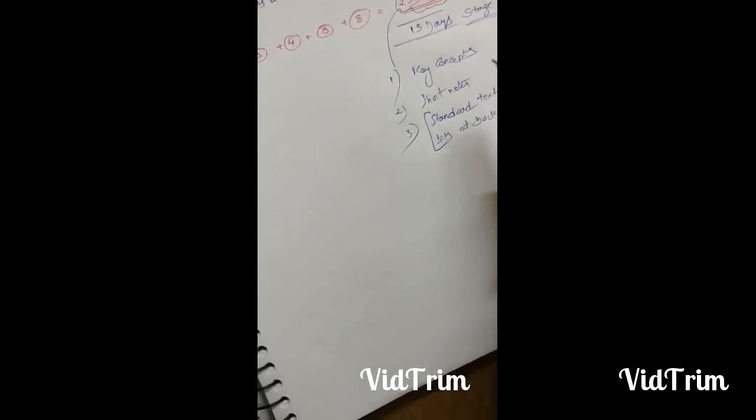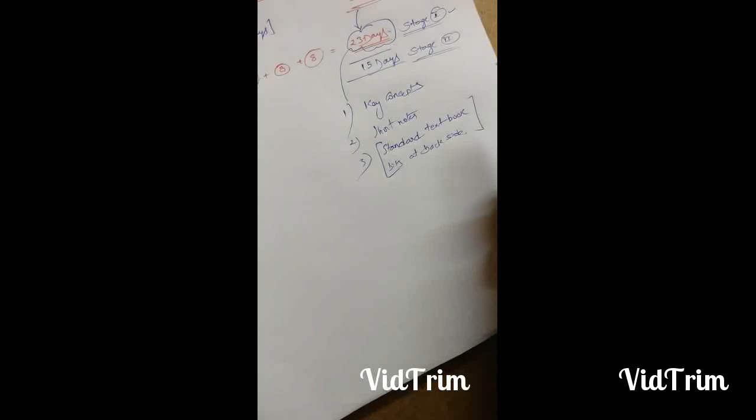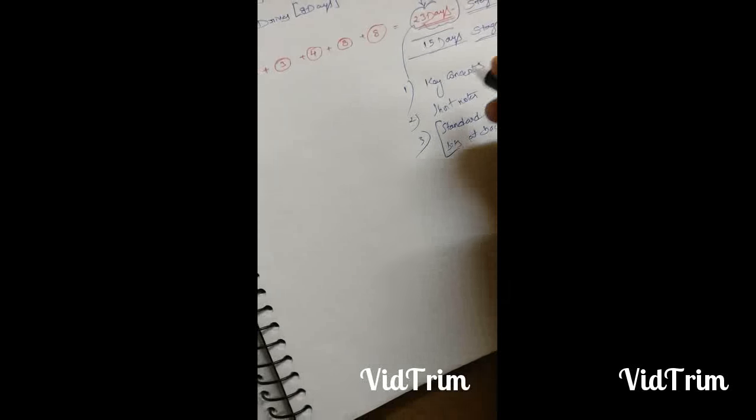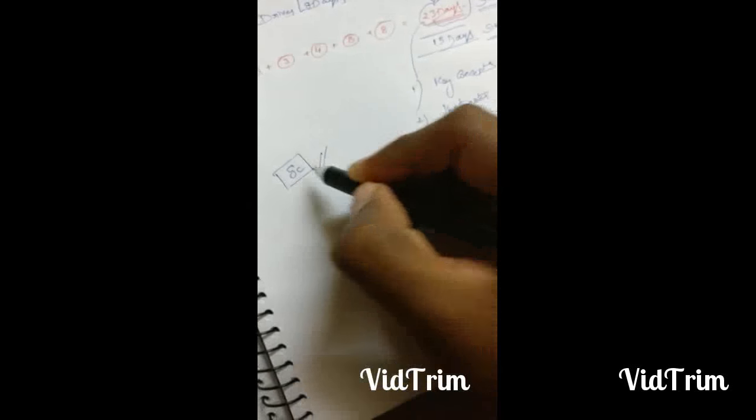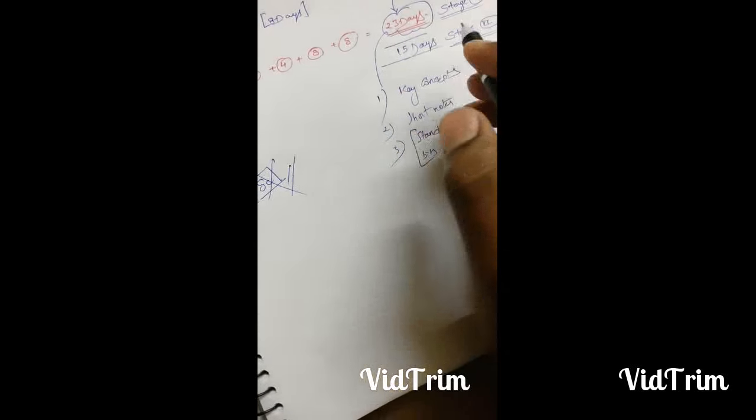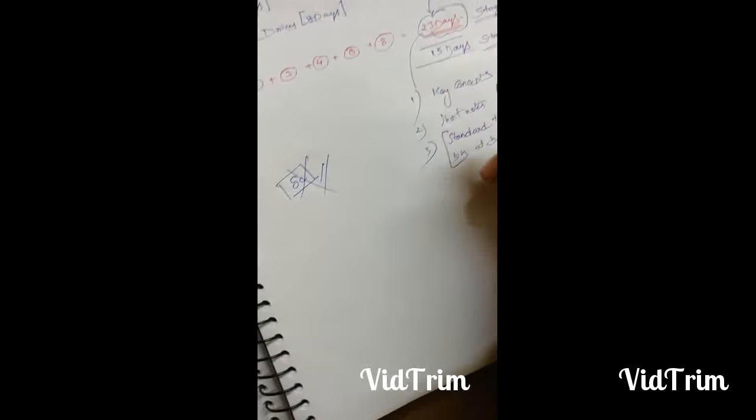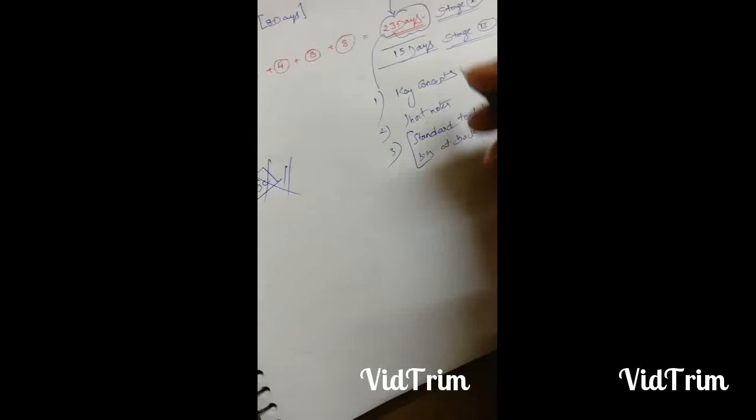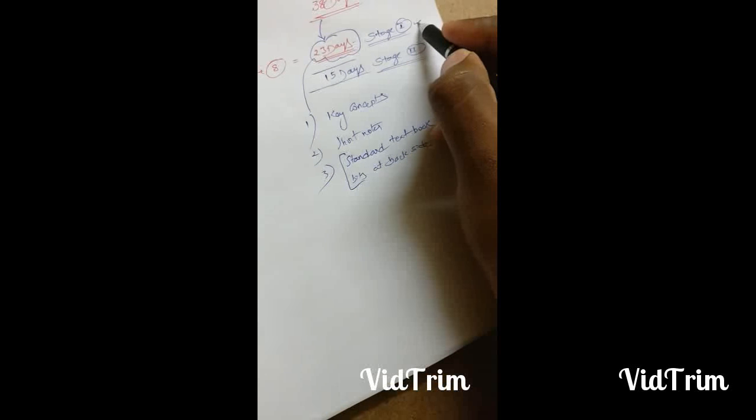In this Stage 1, no need to focus on difficult lengthy problem-solving questions. For example, in power systems there's critical clearing angle - these kinds of questions will not come in AP GENCO. The questions will be very standard, mainly focusing on basic concepts like how stability goes, conditions for steady-state stability or transient stability. This is Stage 1 preparation.